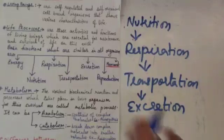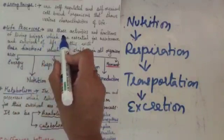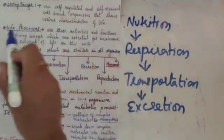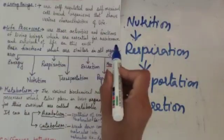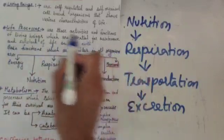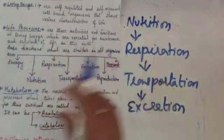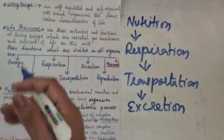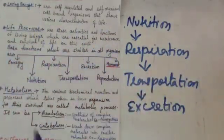Life processes are those activities and functions of living beings which are essential for the maintenance and survival of life on this earth. These are all the basic functions which are similar in all organisms, and we can say that life processes occur in both unicellular and multicellular life forms.